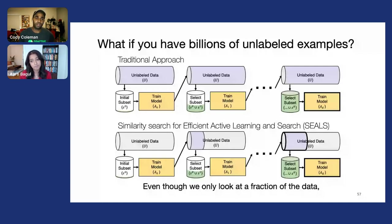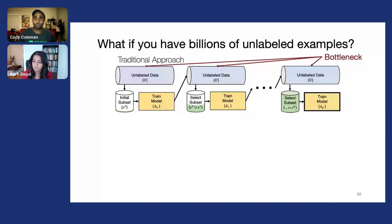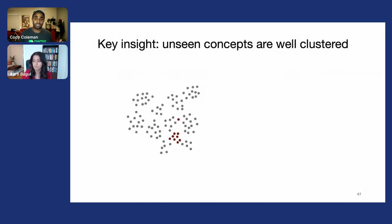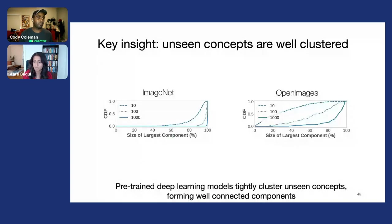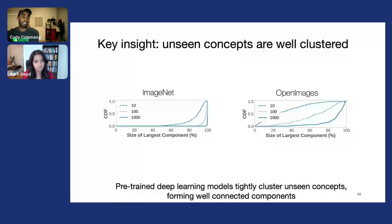Great question. What we found, going back to the key insight, is that rare concepts are actually fairly well clustered in the data as we get better and better representations—especially when we think about foundation models designed to create representations with very nice latent structure.